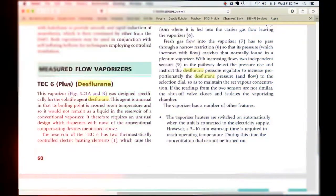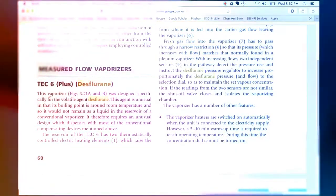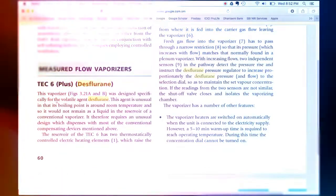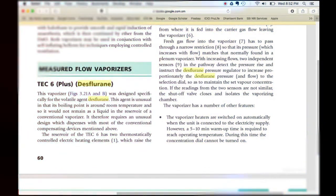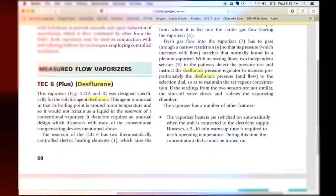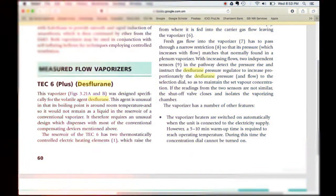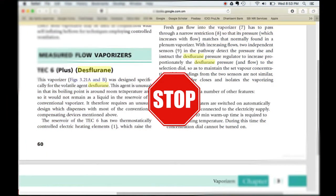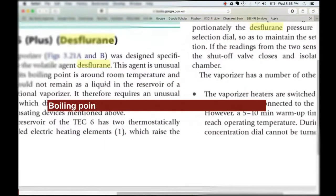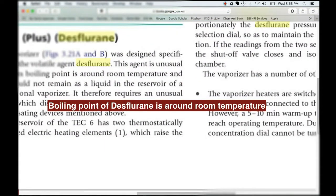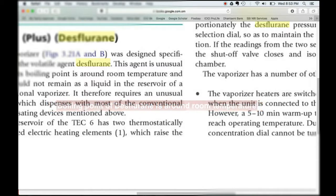Tech 6 plus, this vaporizer was designed specifically for the volatile agent desflurane. This agent is unusual in that its boiling point is around room temperature. Yes, desflurane's boiling point is 22.8 degrees, which means it is an extremely volatile liquid inhalational agent.